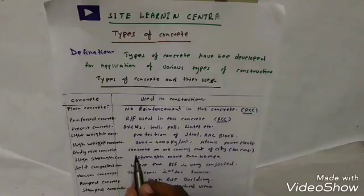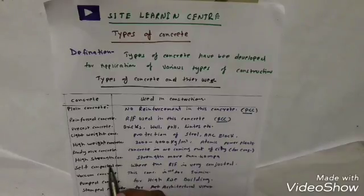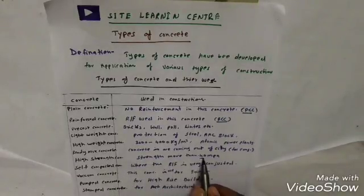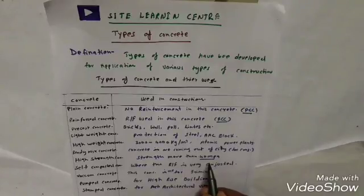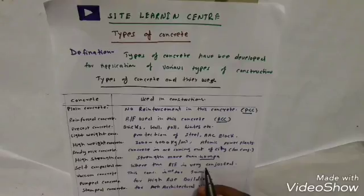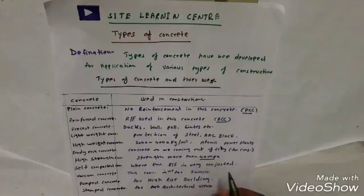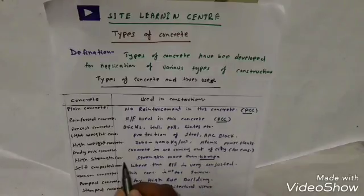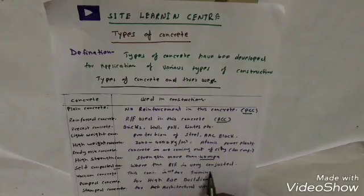The seventh type is high-strength concrete. As you may have seen at site, high-strength concrete has a grade of more than 40 MPa. We have many grades of concrete, and if the concrete grade is more than 40 MPa — such as M50 or M60 — it is called high-strength concrete.